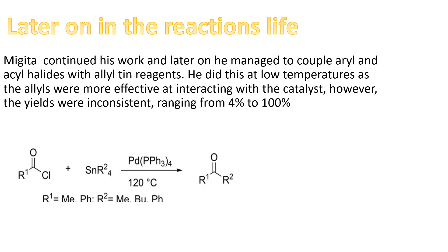Later on, Migata continued his work and managed to couple aryl and acyl halides with allyl tin reagents. He did this at low temperatures, as the allyls were more effective at interacting with the catalyst. However, the yields were varying, ranging from 4 to 100 percent. You can see in the bottom photo the types of reactions he would do — you have an acyl chloride being coupled together with another R group.